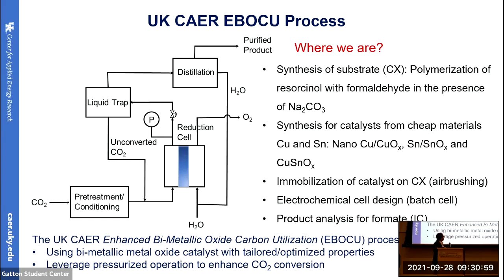This is our process for converting carbon dioxide to formic acid. This is a reactor where pressurized carbon dioxide will be converted to formic acid, and the products will be purified and used. For this, we need suitable catalyst supports so that we can load catalyst heavily, and we need different types of catalysts. We used commercial carbon cloth, and carbon xerogel was coated onto the carbon cloth by polymerization of resorcinol and formaldehyde. We used very cheap metals — copper and tin — for making catalysts: nano copper/copper oxide, tin oxide, and copper-tin nanocomposites, synthesized by hydrothermal process, and the products were immobilized using drop-casting.